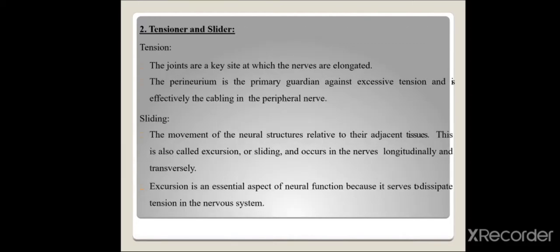Shacklock's second concept covers tensioners and sliders. Joints are a key site at which nerves are elongated. However, the perineurium acts as a guardian, allowing only 18 to 22 percent of strain on the nerve before failure — that is, nerve injury. Sliding is the excursion movement attained by the nerve either longitudinally from proximal to distal or transversely from side to side. Excursion is essential to dissipate tension throughout the nervous system.